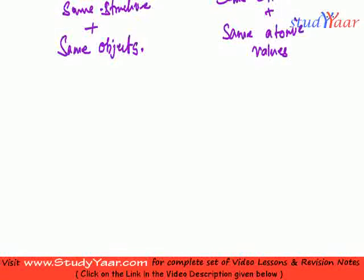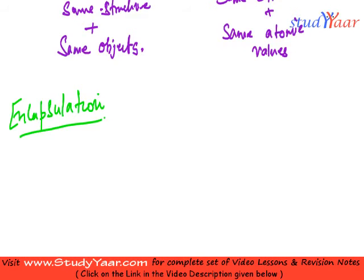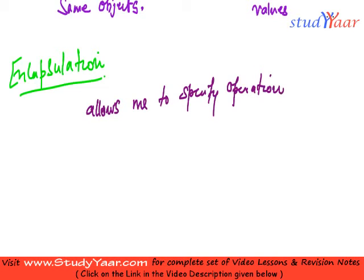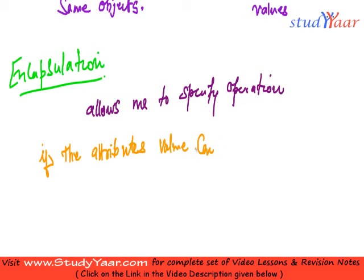The next feature we are going to look at is the encapsulation feature provided by an object-oriented database. Encapsulation tells me that my object-oriented database allows me to specify operations. Now, if the property values or the attribute values can only be changed via an operation, then that kind of encapsulation is called total encapsulation.